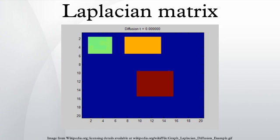The symmetric normalized Laplacian is defined as L_sym = D^{-1/2} L D^{-1/2}, where L is the Laplacian, A is the adjacency matrix, and D is the degree matrix. Since the degree matrix D is diagonal and positive, its reciprocal square root is simply the diagonal matrix whose diagonal entries are the reciprocals of the positive square roots of the diagonal entries of D. The symmetric normalized Laplacian is a symmetric matrix.